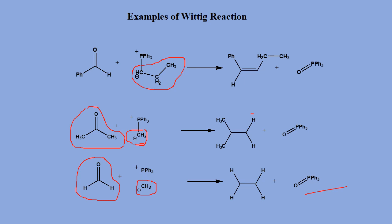In the second example, when a ketone reacts with a phosphorus ylide, the oxygen is replaced by a CH2 group and an alkene is formed. In the third example, when formaldehyde reacts with a phosphorus ylide using the same phosphorus compound, oxygen is again replaced by the CH2 group, giving an alkene product and triphenylphosphine oxide as a byproduct.